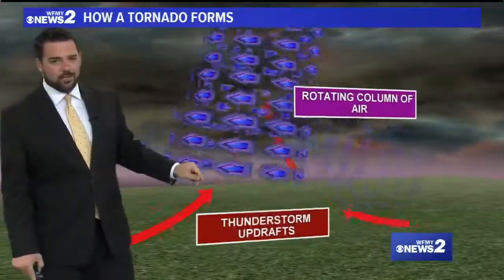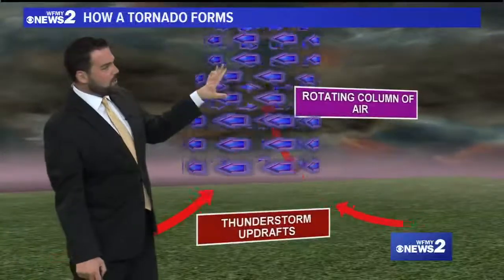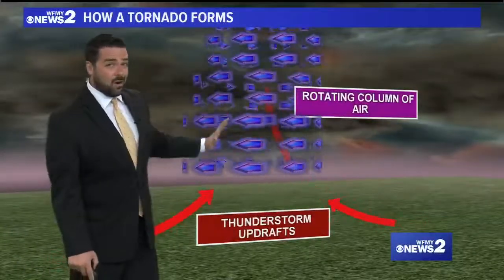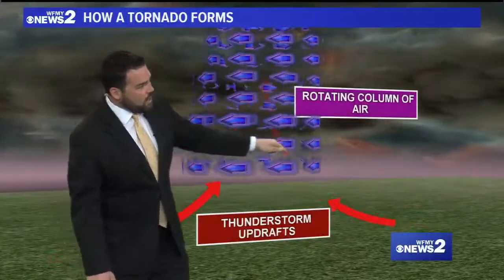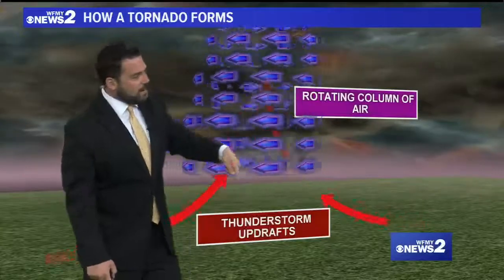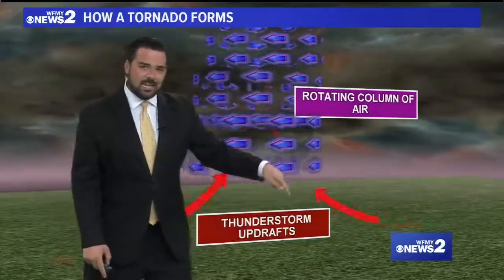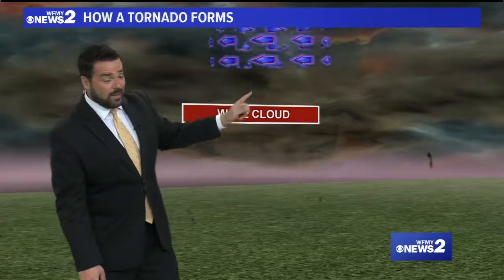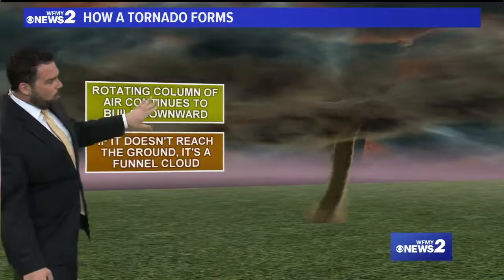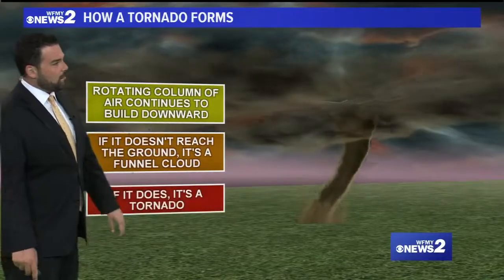That's when we start to get into trouble. If the thunderstorm is able to rotate that air in the vertical direction — notice we now have spinning just like this — it's not long before we start to see thunderstorms that can produce these wall clouds. That's when the cloud gets a little bit lower in the sky and it is spinning. It's a rotating cloud, and from those clouds, that's when you can start to get what actually becomes a tornado.